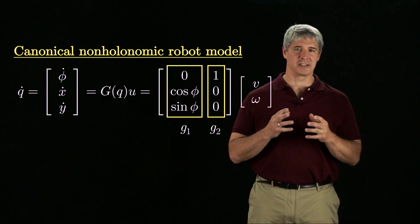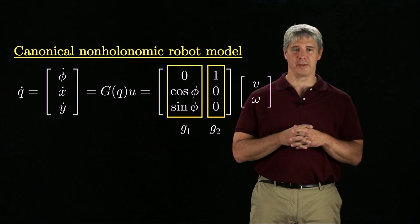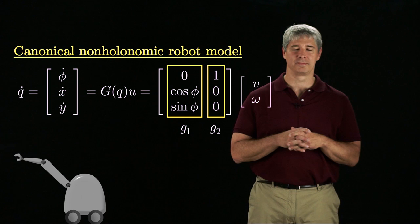We call this kinematic model our canonical non-holonomic robot model because it also models the unicycle and the diff drive. They also have control transformations that take the virtual controls V and omega and express them in terms of the actual controls.